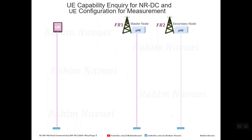A gNB with NR dual connectivity capability (NRDC) can request the device to send its capability related to NR dual connectivity. One case where the gNB requests this is during the registration process. For this case, an NR dual connectivity capable gNB includes an NRDC flag in the UE capability inquiry message sent to the device, with the NRDC flag set to true.